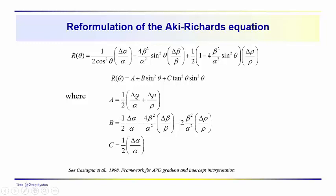A is equal to one-half delta alpha over alpha plus delta rho over rho. Alpha, remember, is the compressional wave velocity. Delta alpha would be Vp2 minus Vp1. Alpha by itself or rho by itself or beta by itself would be the average value of the compressional wave velocity, average density, average shear wave velocity.